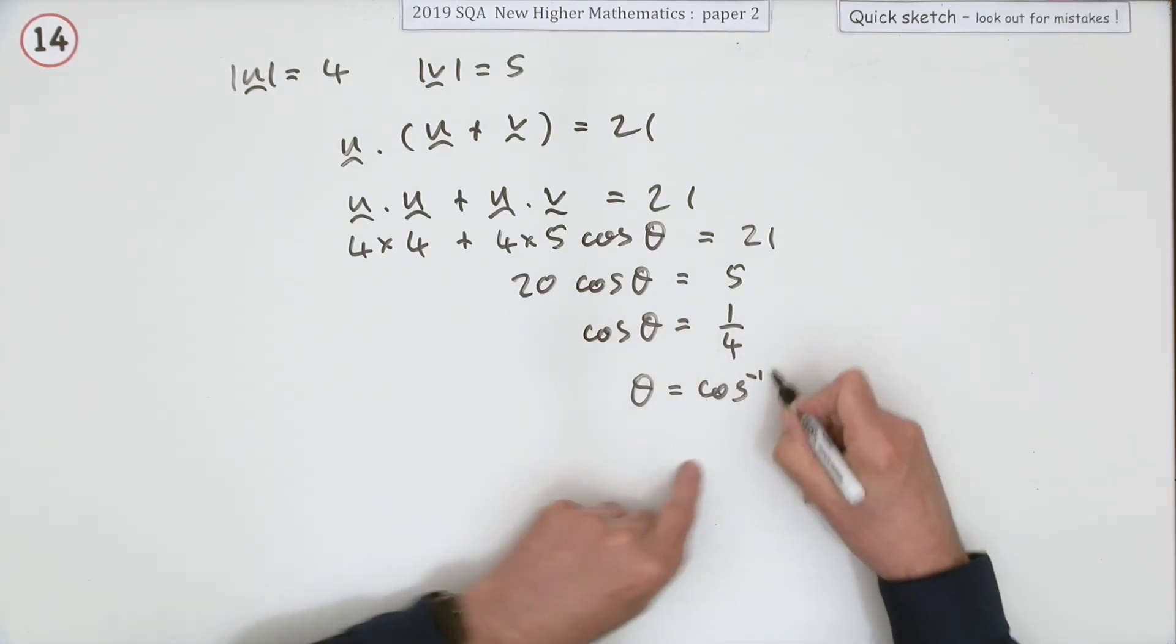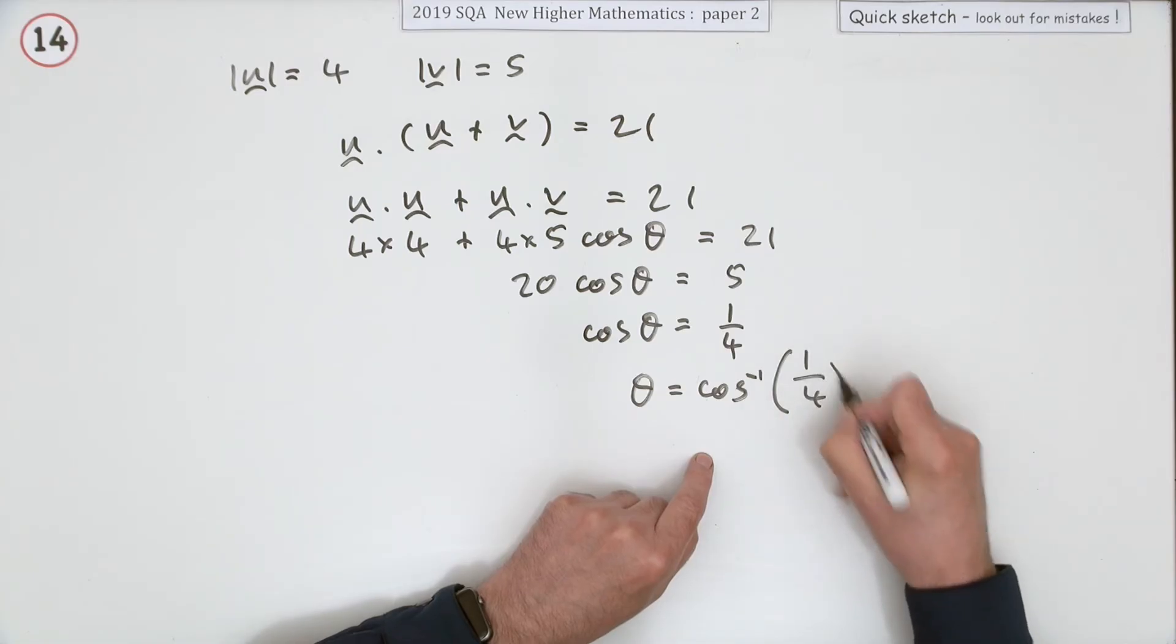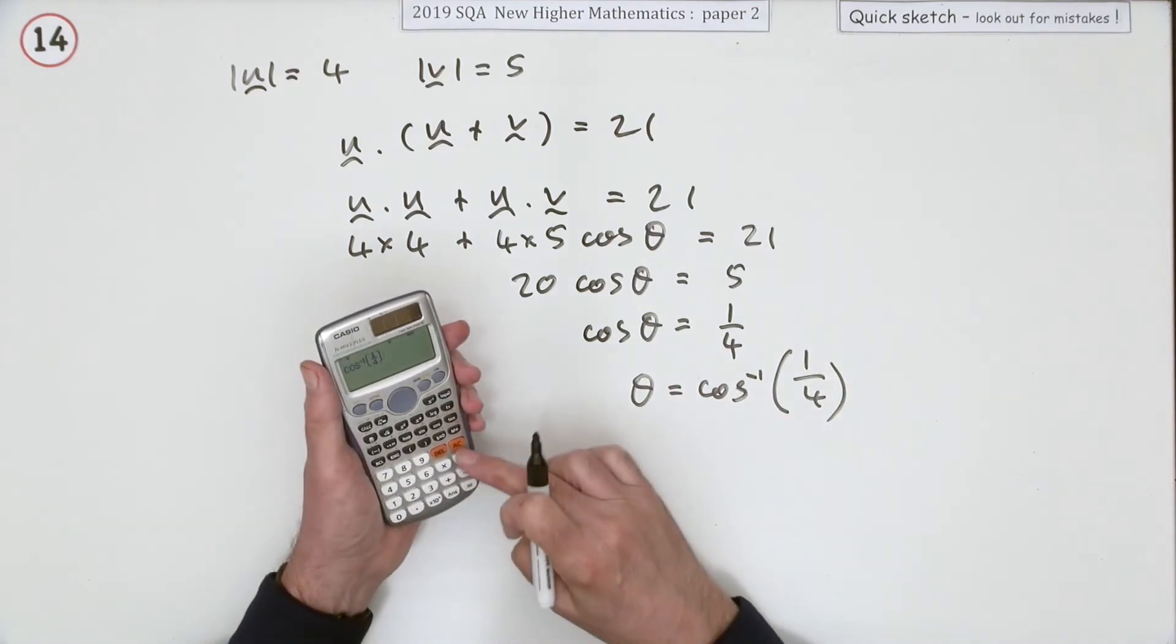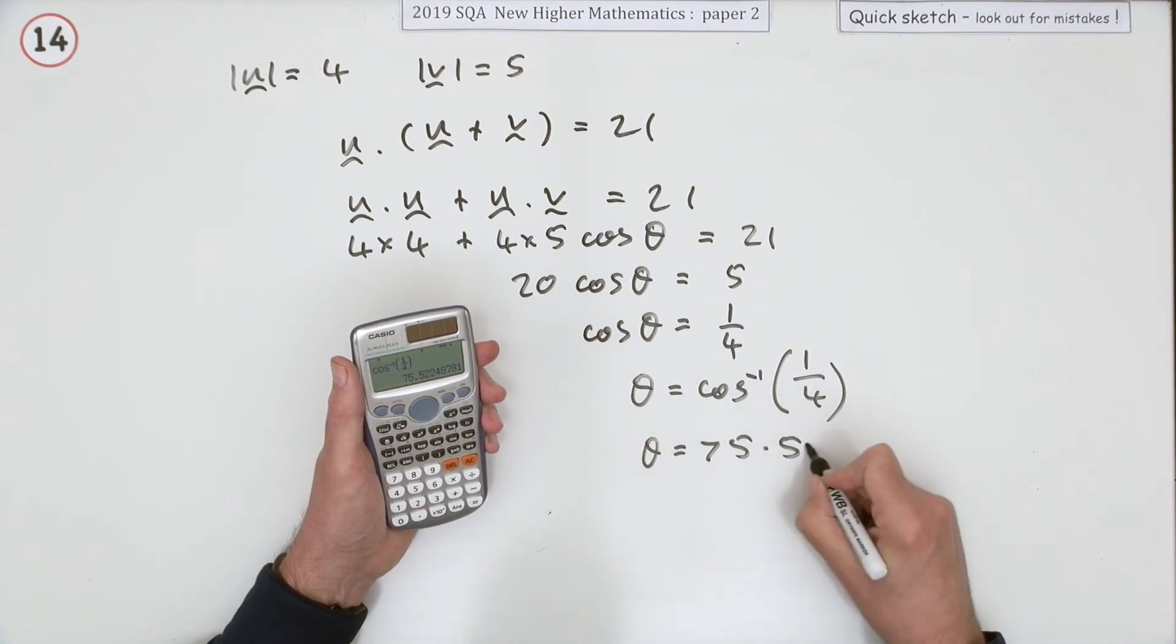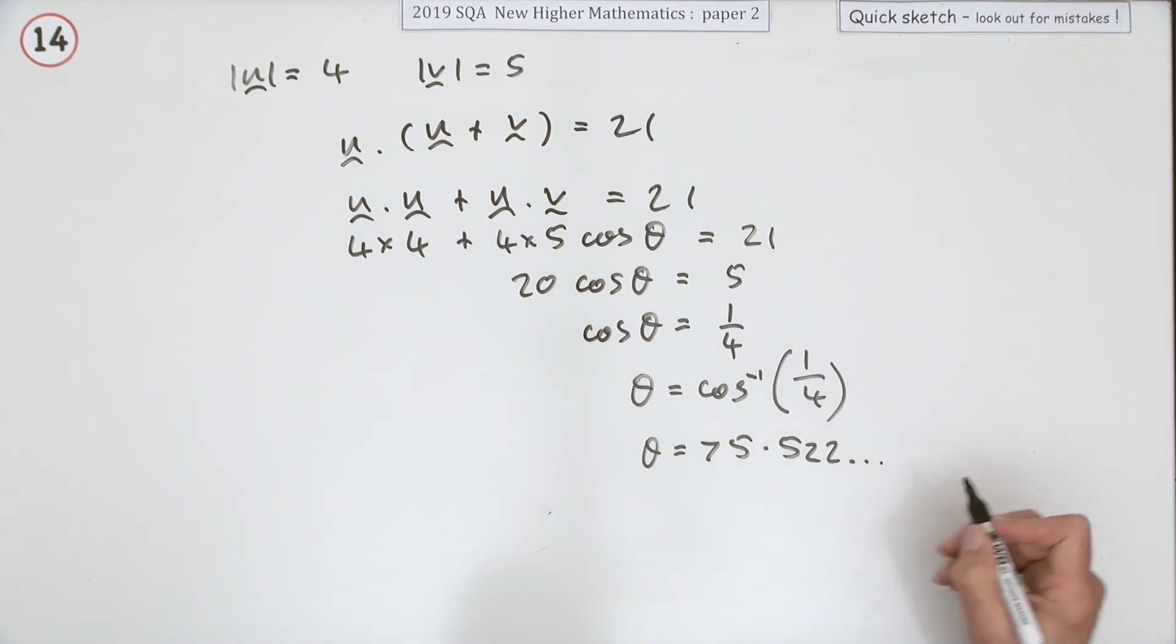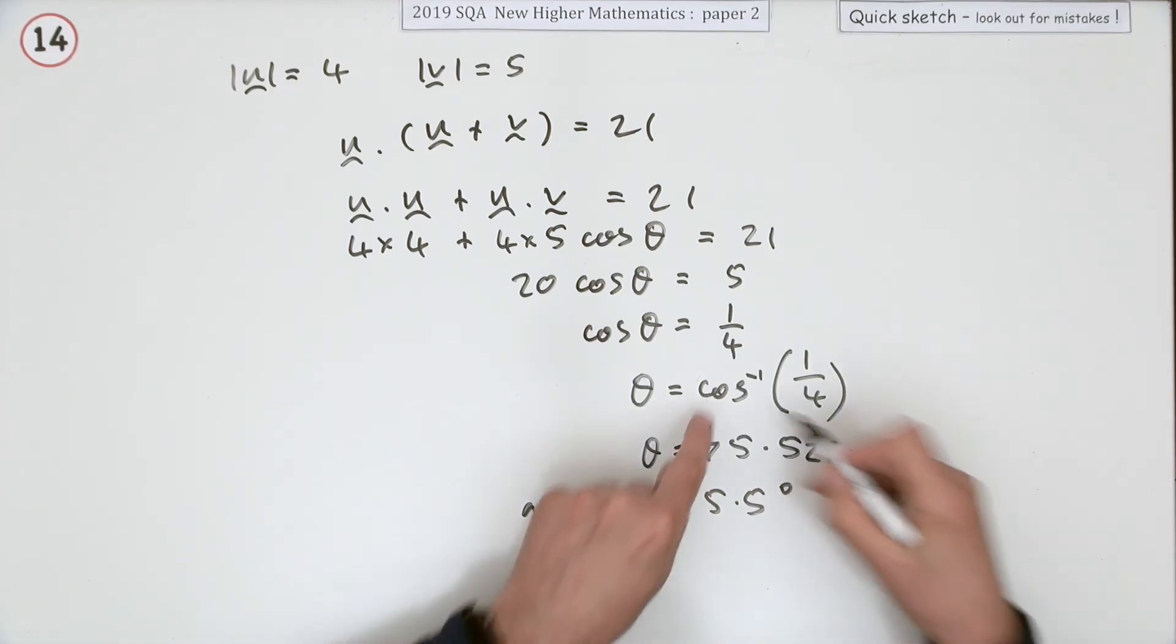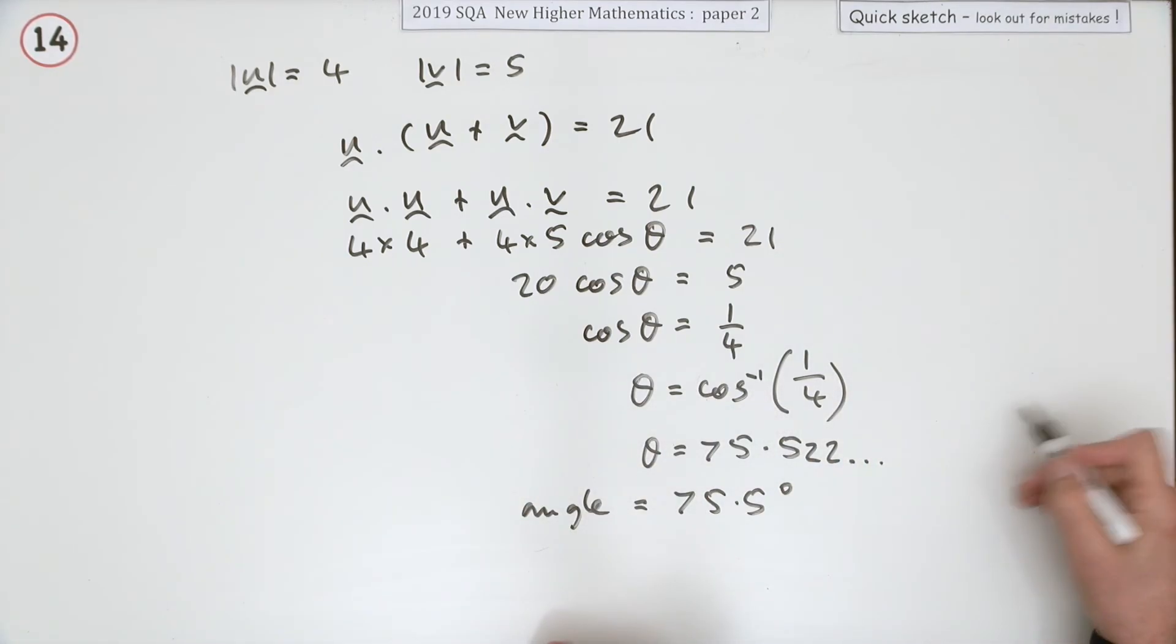So the angle is going to be the inverse cos of a quarter, and if you press the buttons you get the angle is 75.5 to 2 and so on. We'll just put angle equals 75.5 degrees. Yes, there is another angle obviously for cosine, 360 minus it, but that's just the reflex angle. So the angle between them is 75.5 degrees.